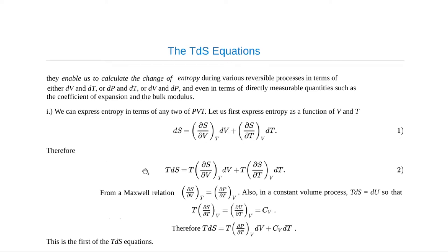Therefore, if we multiply this equation by temperature T, we have on the left-hand side TDS, which equals T into partial S by partial V at constant temperature, into dV, plus T into partial S by partial T at constant volume, into dT. We know that from Maxwell's equation, partial S by partial V at constant T is equal to partial P by partial T at constant V. We use this relation in the above equation.